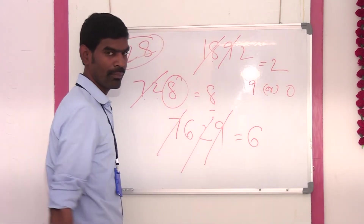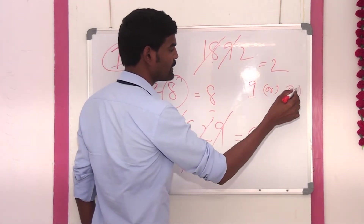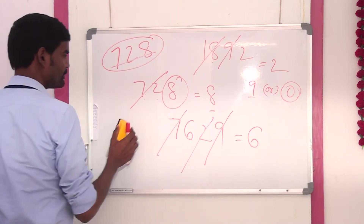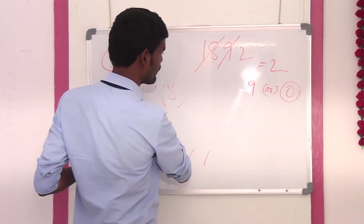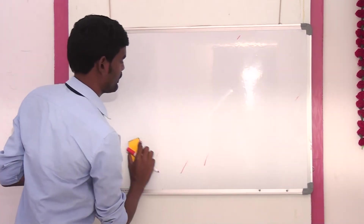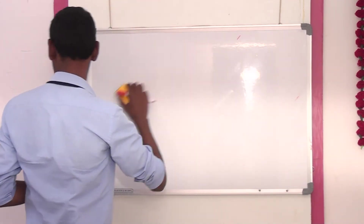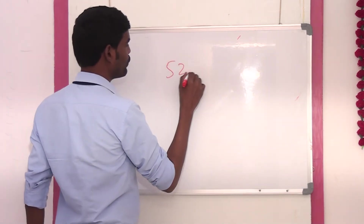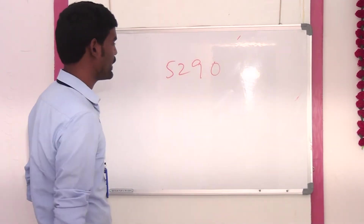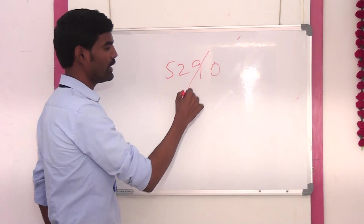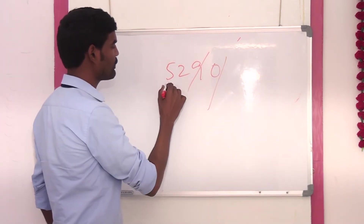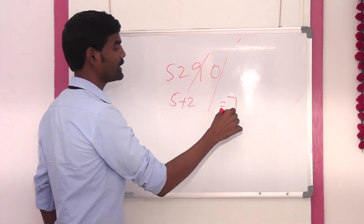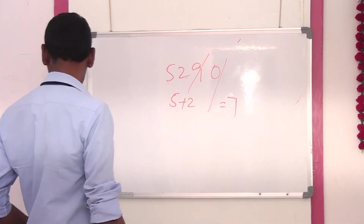So in the digit sum method, 9 is also written as 0. For example, the digit sum of 5290: we can cancel the 9 here, and 0 also cancels. So 5 plus 2 is 7. The digit sum is 7.